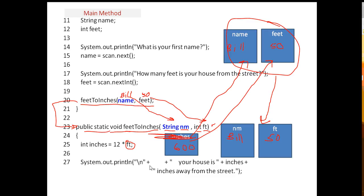And then, so this parameter variable is called in a calculation, but also the parameter variable might be called in a print statement. So, nm is being called, and that way this says bill, and then comma, bill, your house is, and then this is calling inches, your house is 600 inches away from the street.